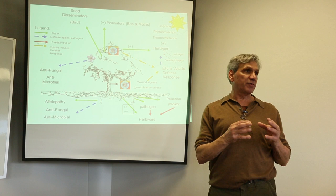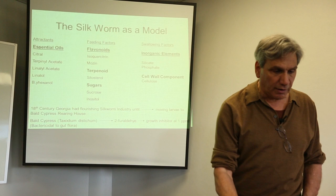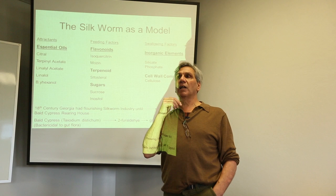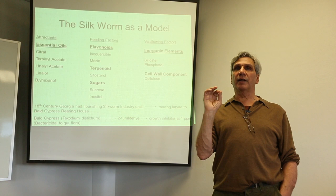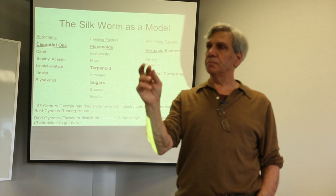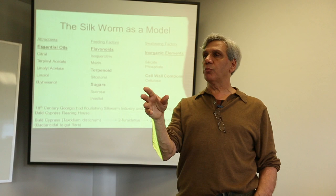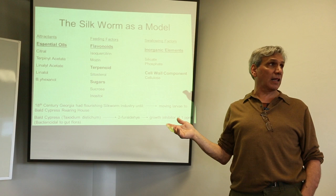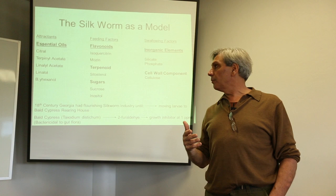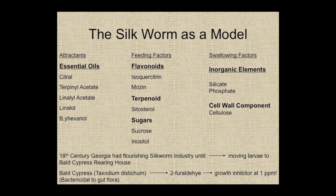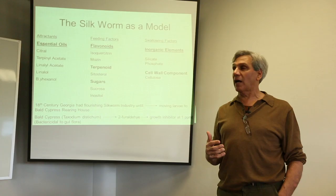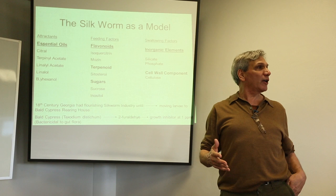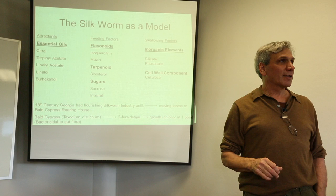The communication downstream to other plants may be the most impressive part of the plant secondary metabolite phenomenon. The silkworm is a useful model here. In fact, the silkworm industry attempted in Georgia in the 1700s collapsed because they moved the larvae into houses made of bald cypress — taxodium — which contains furaldehyde, a growth inhibitor at a mere one part per million. That tree vapor, itself a plant secondary metabolite insecticide, killed all the silkworm larvae just by hosting them in that 17th century brooding house.